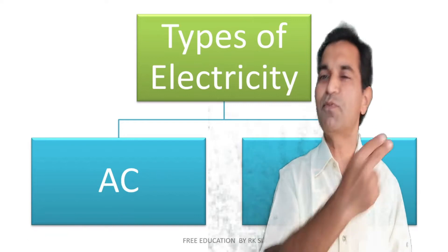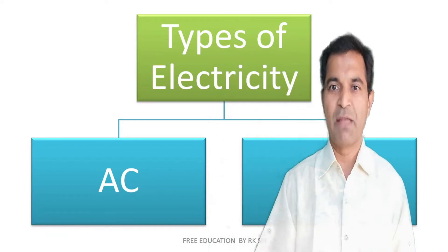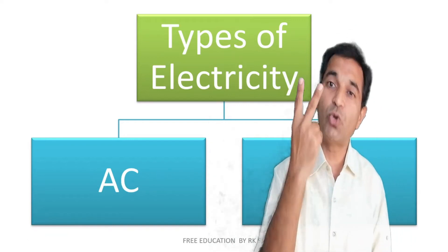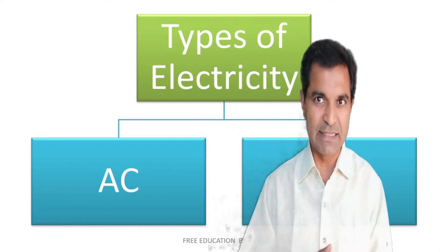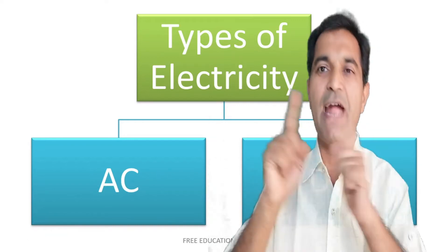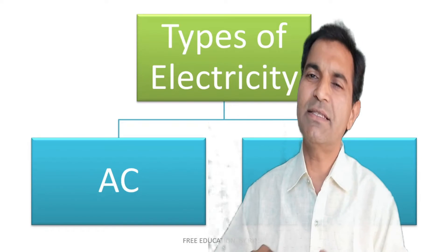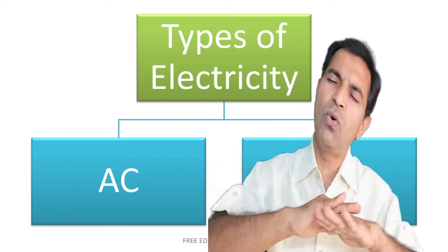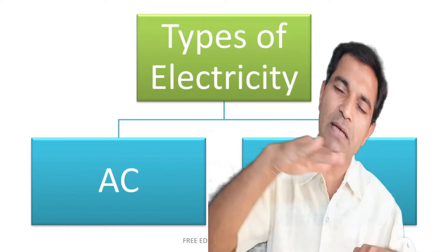What are the different types of electricity? Basically, there are two types: AC and DC. DC is a direct, steady flow — it goes in one direction consistently.